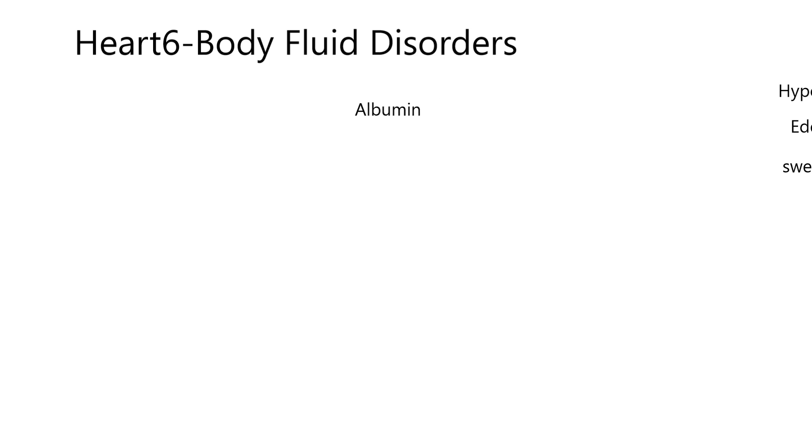The first thing I want to say is albumin is important because it's a protein made by the liver, found in the blood, and it's responsible for maintaining blood volume. Fluid leaves capillaries by hydrostatic pressure on the arterial end of the capillary, and on the venous end, fluid tends to come back into the capillary by osmosis, and that osmosis is really governed by albumin.